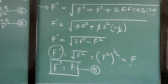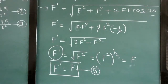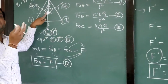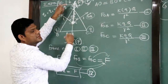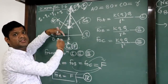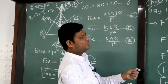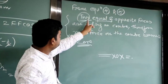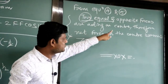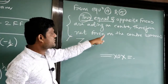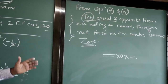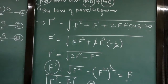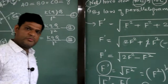F' equals F, so the two forces — one upward and one downward — are equal in magnitude but opposite in direction. From equations 4 and 5, the two equal and opposite forces acting on the center mean the net force on the center becomes zero. Take a screenshot of example 1.6. Thank you.